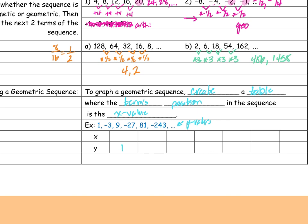I'll write in the sequence: 1, −3, 9, −27, 81, −243, and so on. Term 1 is 1, term 2 is negative 3, term 3 is 9, term 4 is negative 27, term 5 is 81, term 6 is negative 243. That's how I make a table, and if I wanted to graph it, I'd just plot these points as (x, y) pairs.